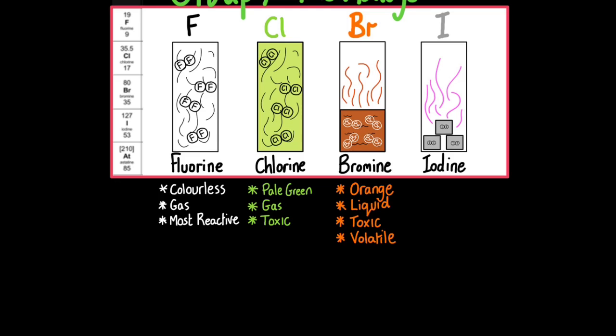Bromine, other than mercury, is the only other liquid at room temperature and under normal atmospheric pressure on the periodic table. It is an orange liquid. Like chlorine, it is also toxic, and it's also very volatile. What this means is it will readily change state. So when you pour bromine out as a liquid, you'll see it very quickly evaporates and forms these red vapors as a gas.